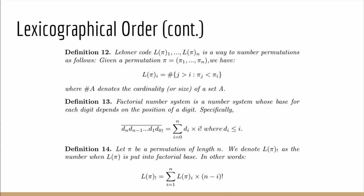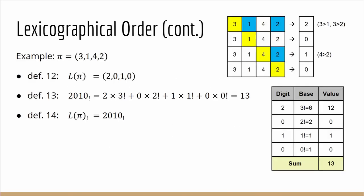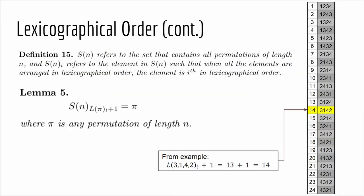So we can utilize a Lehmer code and the factorial number system to assign a number to each permutation. So for example if our permutation is (3,1,4,2) then its Lehmer code would be (2,0,1,0). If that's a number in factorial base it corresponds to 13 in decimal base so we assign the number 13 to (3,1,4,2). Interestingly it's just one less than its index in lexicographical order and in fact we can extend it to all permutations. That's the number we assign to it is one less than the index of it in lexicographical order.